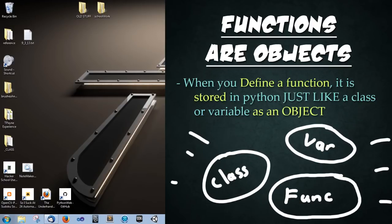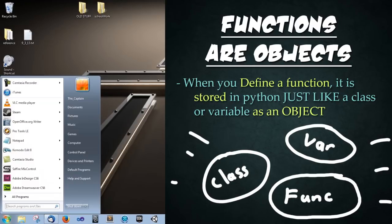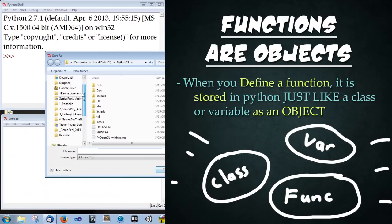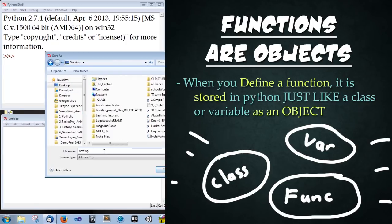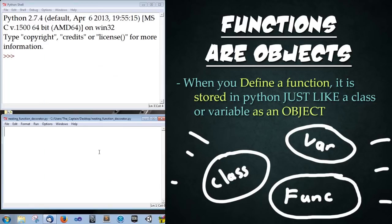Alright so I'll start this by saying functions are really just objects. And let's go ahead and crack open idle and let's go ahead and save this file to the desktop and call this nesting underscore functions underscore decorators dot py. Alright so you don't need to follow along with this part it's just to prove that functions are indeed objects in Python.